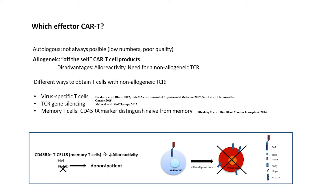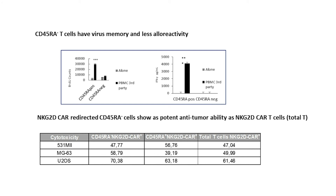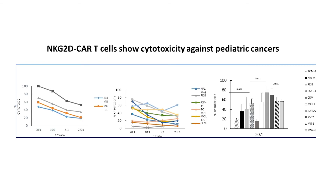In our clinical bone marrow transplant program, we use a cell therapy approach against infection using CD45RA-negative T cells, and we have not observed any GvHD even in haploidentical settings. So we decided to use these memory CD45RA-negative T cells as effector cells for the CAR, because they proliferate less in third-party cultures and produce less interferon-gamma in third-party cultures, while keeping the potency of the effector cells against different cell lines. We performed many experiments using these CD45RA-negative T cells expressing the NKG2D receptor.